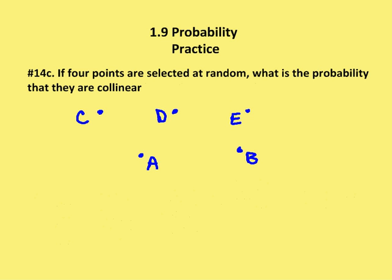The last part of this question: if four points are selected at random, what is the probability that they are collinear? No four points are going to be collinear. C, D, and E are collinear, but C, D, E, and A are not collinear. C, D, E, and B are not collinear. A, B, D, and E are not collinear. So the probability that any four points will be collinear is 0 — P equals 0.